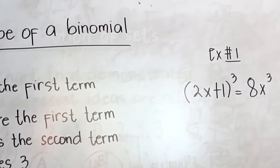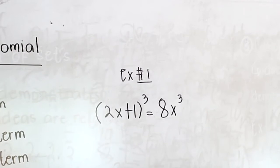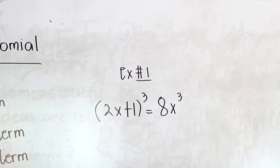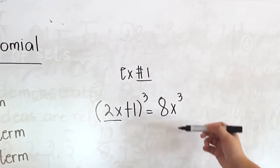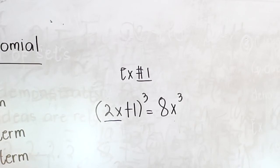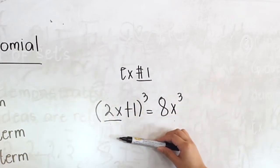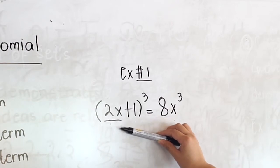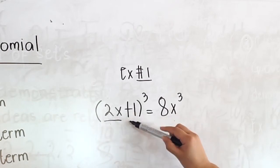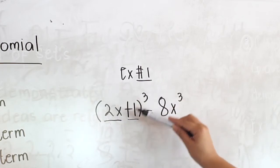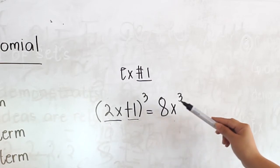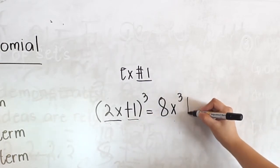Example number one: (2x + 1) cubed. First, we cube the first term, which is 2x. So 2x cubed is 8x cubed. Second, square the first term times the second term times 3. So 2x times 2x is 4x squared, times 1 is 4x squared, and times 3 is 12x squared.